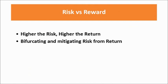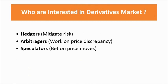Now let us see who are interested in derivatives. There are three people who are basically interested in derivatives: hedgers, arbitrators, and speculators. A hedger is somebody who wants to mitigate or basically transfer the risk. Let us take an example of an individual and an insurance company.